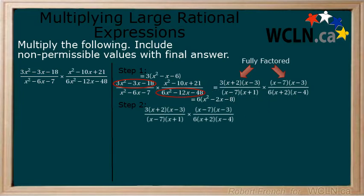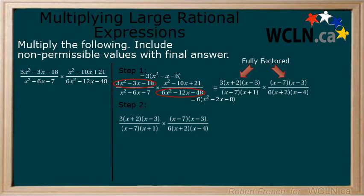Step 2. Cancel common factors. We can cancel x plus 2 and x minus 7 and reduce 3 over 6 to 2 in the denominator. From these cancelled factors, we get non-permissible values of x cannot equal negative 2 and 7.